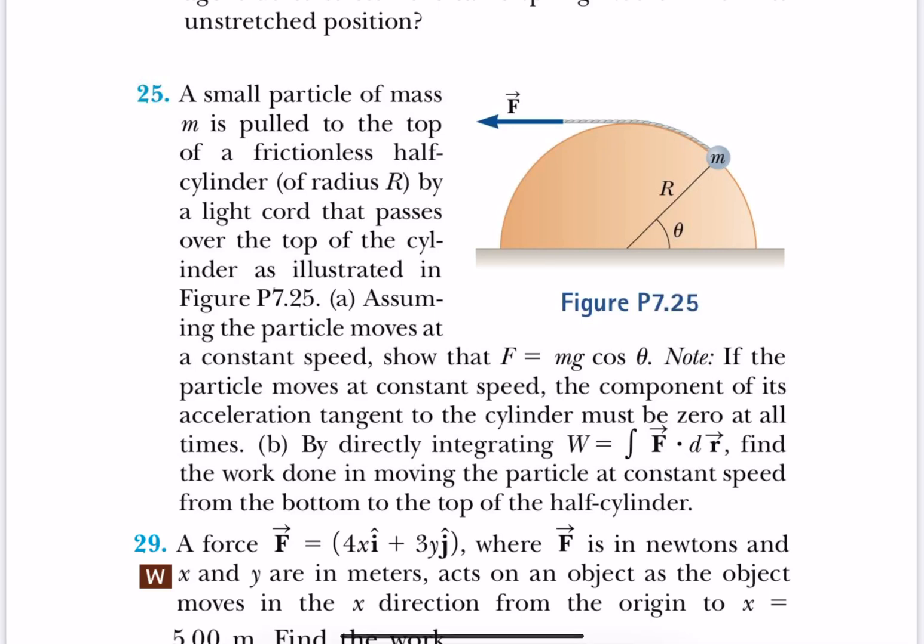Hello students, here we have problem number 25 from Chapter 7. A small particle of mass m is pulled to the top of a frictionless half cylinder of radius r by a light cord that passes over the top of the cylinder, as illustrated in the figure.